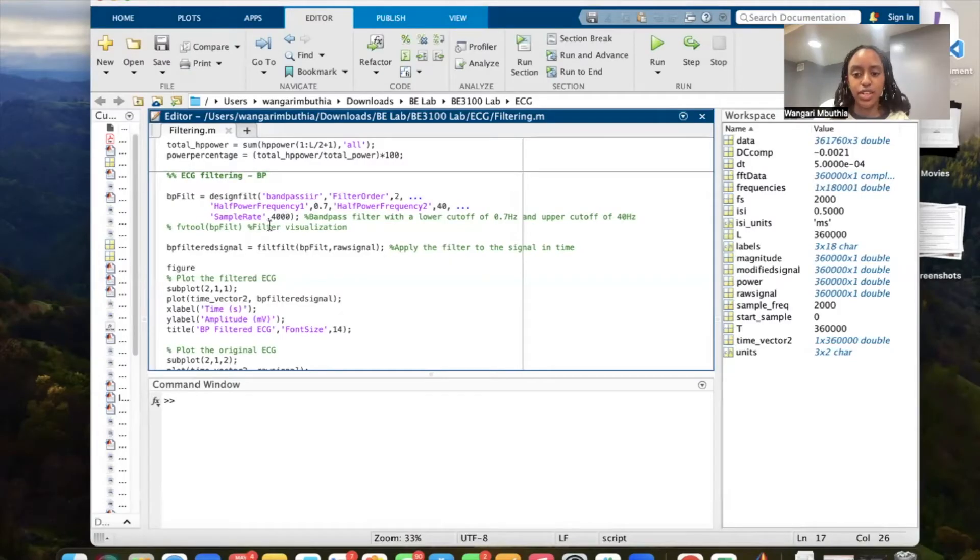To isolate our ECG signal from the noise, I designed a digital band pass filter that cuts out the low frequencies that contribute to the baseline wander and the high frequencies which contribute to the jittery nature of the curve. So if we run this section of code,